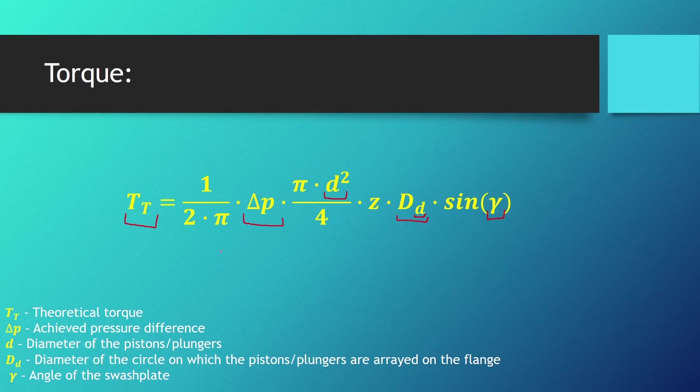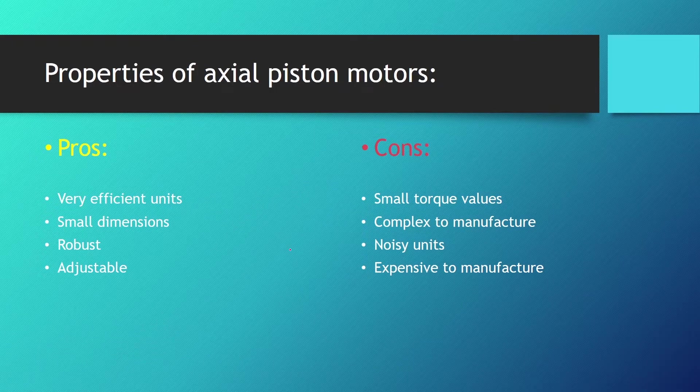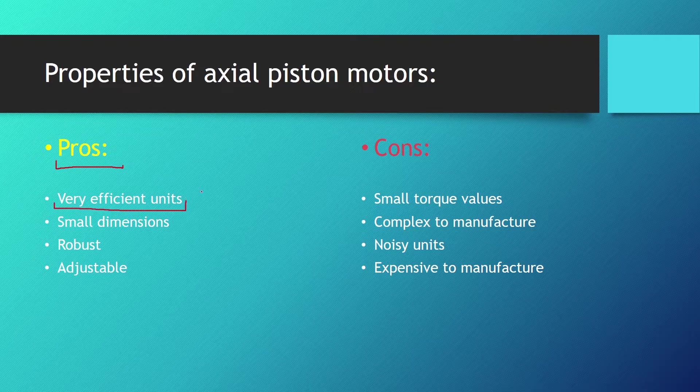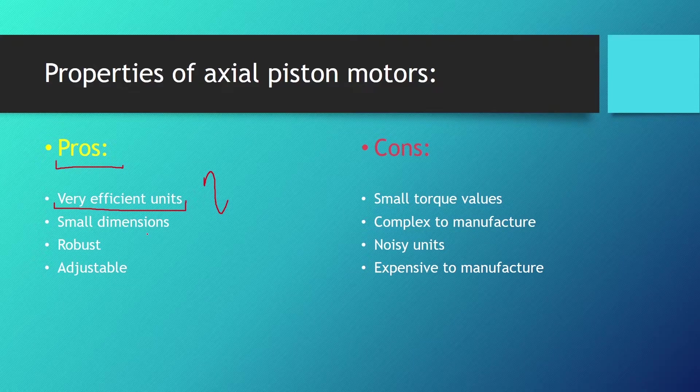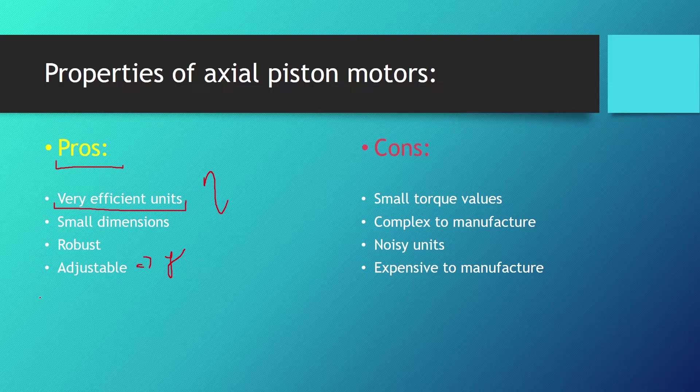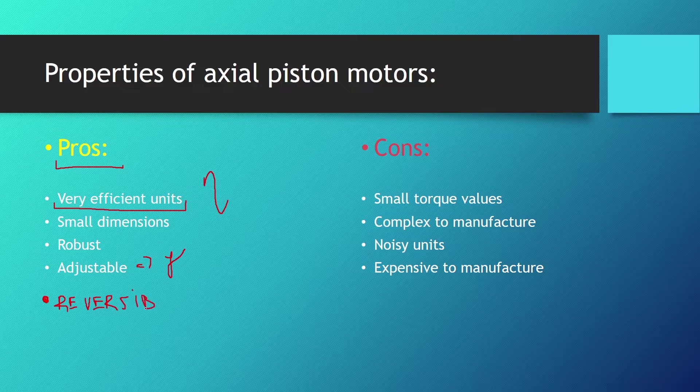Let's talk about the properties of axial piston motors. The pros are that they are very efficient units with high efficiency factors. They have small dimensions which means we can fit them anywhere. They're robust and they have the option to be adjustable with adjusting the angle of the swash plate or the angle at which the bent axis motor is positioned. Some axial piston units are reversible machines that can work in a pump or motor regime.